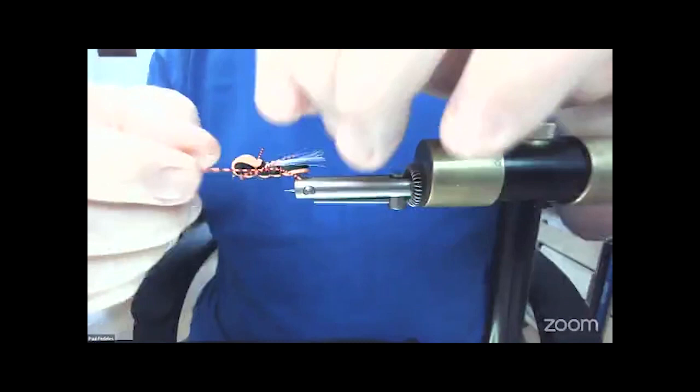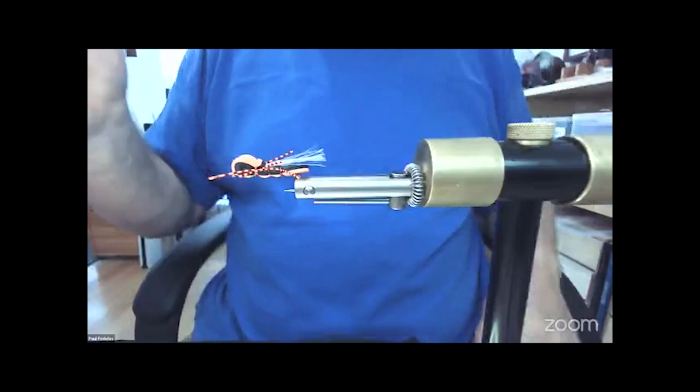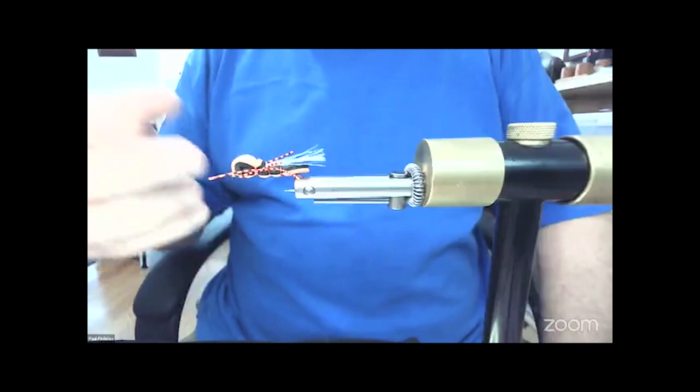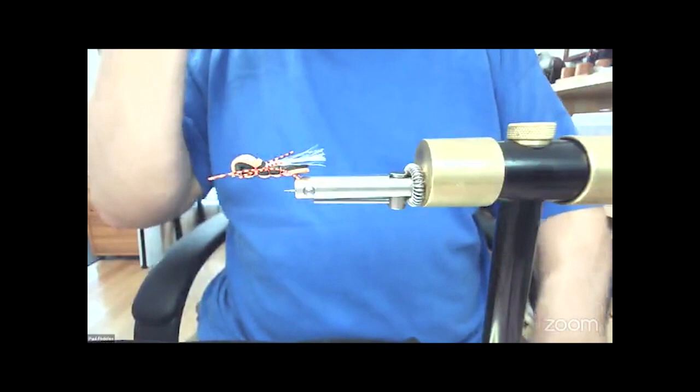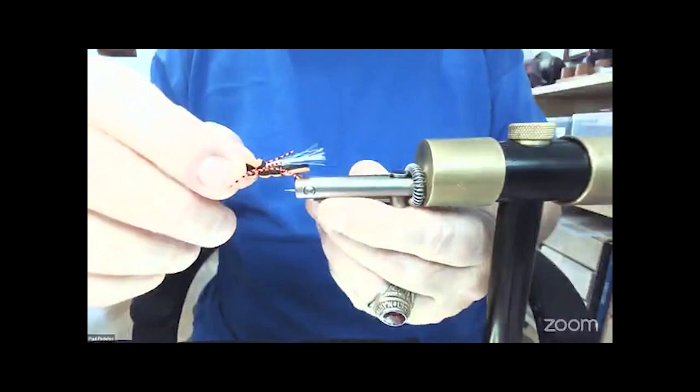I had once, I was fishing, and I cast one out, and there was a swirl underneath it. And I left it there and waited and twitched it and the fish came up and actually slapped it with its tail. And then I twitched it some more, and then it came up and grabbed the fish. And that's the orange bass flopper.